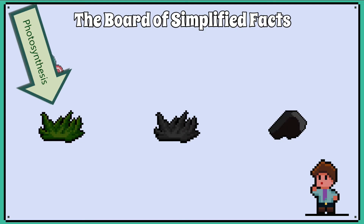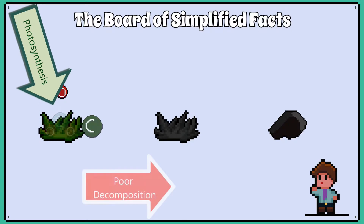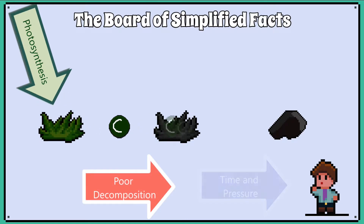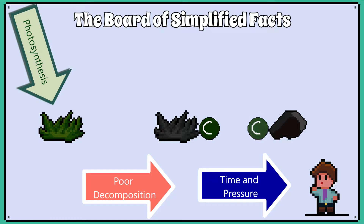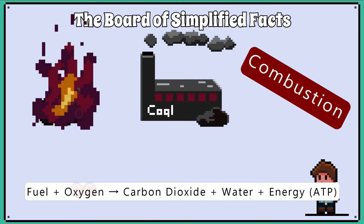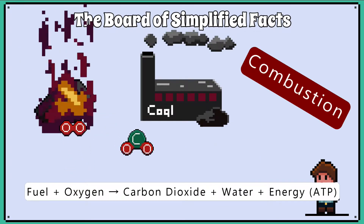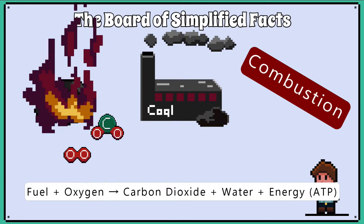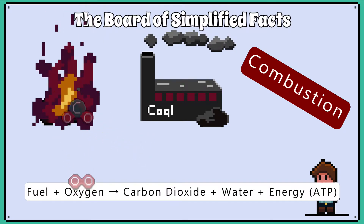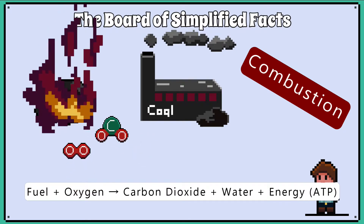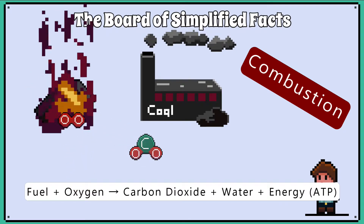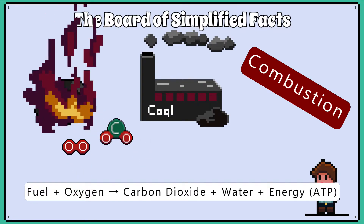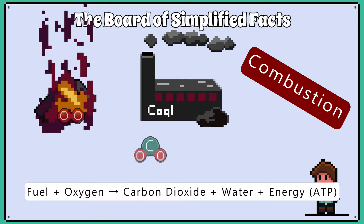These fossil fuels are known as hydrocarbons and they are made of carbon which has been taken from the atmosphere and stored in the ground. Fossil fuels are a great source of chemical energy and we burn fossil fuels in a process called combustion, which releases the energy but also the carbon dioxide back into the atmosphere.